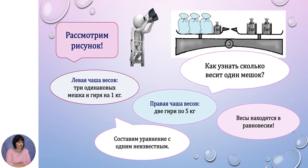Рассмотрим рисунок. Как узнать, сколько весит 1 мешок? Рассмотрим левую чашу весов. На левой чаше 3 одинаковых мешка и гири на 1 кг. На правой чаше 2 гири по 5 кг. И ещё мы наблюдаем, что эти весы уравновешены, то есть находятся в равновесии.